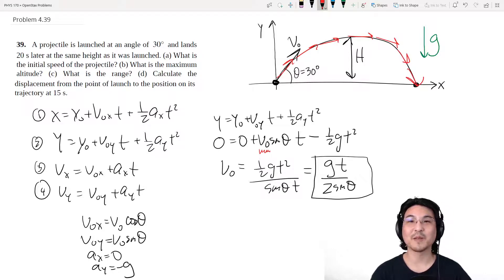So at the maximum height, look right here, the velocity is horizontal. So that means there's an x component, but no y component. So at the maximum height, Vy is zero. So I can use this formula right here.